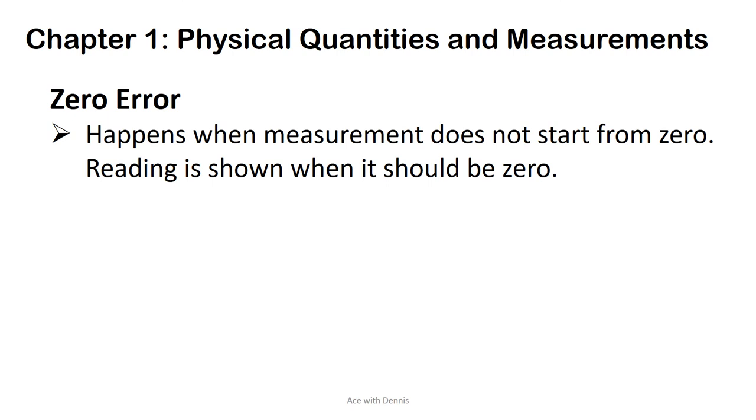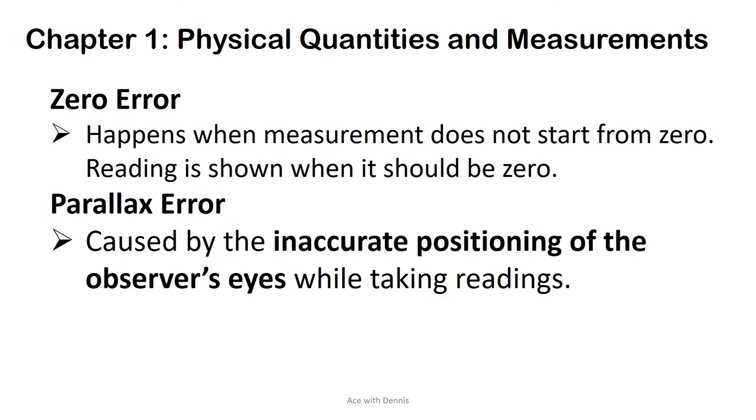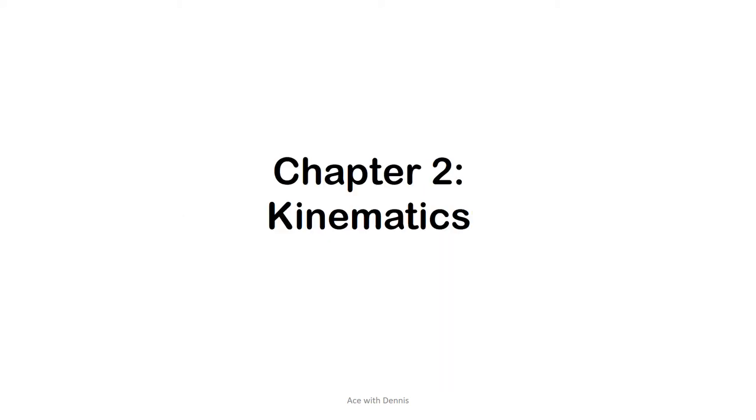Parallax error: Parallax error is caused by the inaccurate positioning of the observer's eyes while taking readings. Chapter 2, Kinematics.